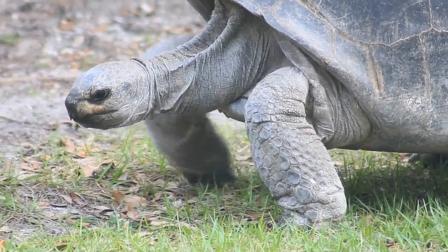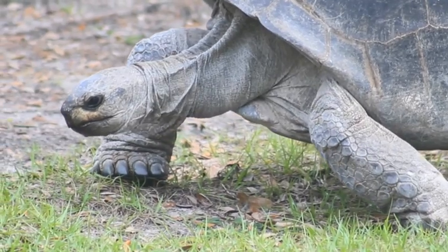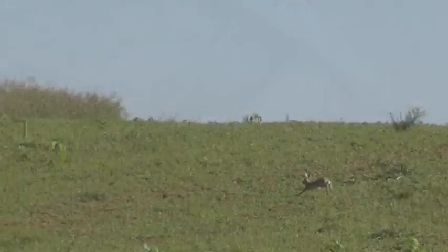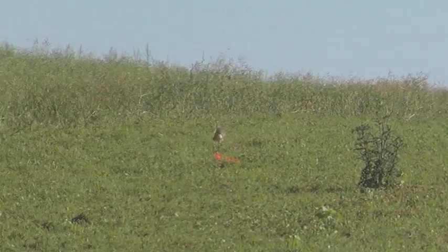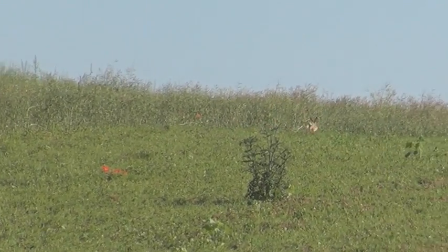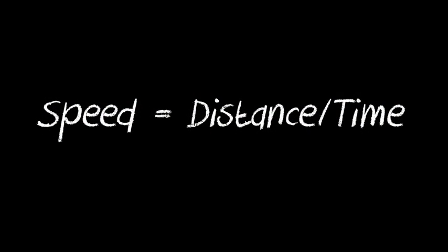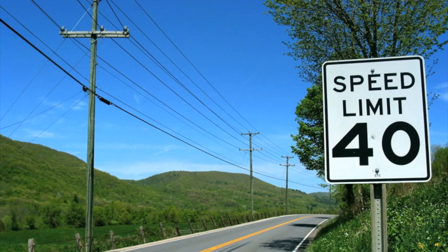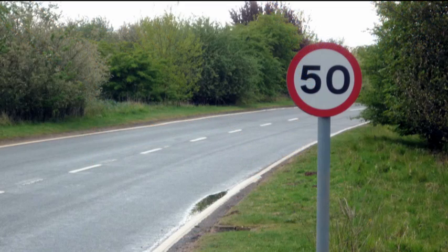Most of us have heard the story of the tortoise and the hare. The tortoise is slow and the hare is fast. But what exactly does this mean? The speed of an object is defined as the distance it will travel in a certain amount of time. If something travels 100 feet in 10 seconds, its speed is 10 feet per second. We often talk about speeds in miles per hour in the US, or kilometers per hour in most other parts of the world.